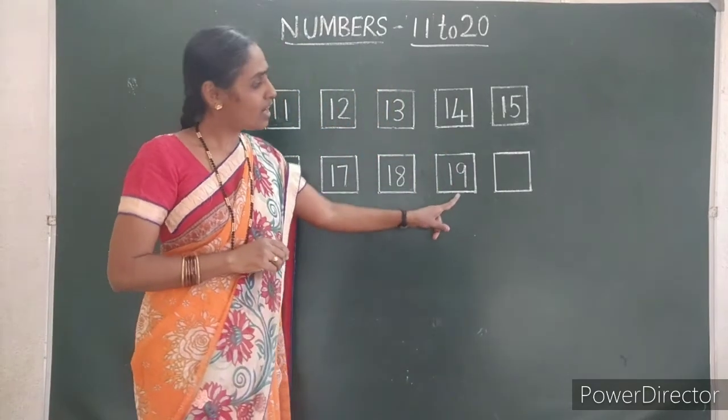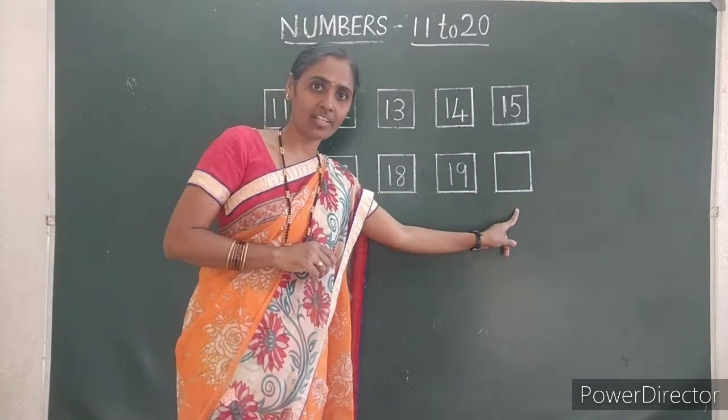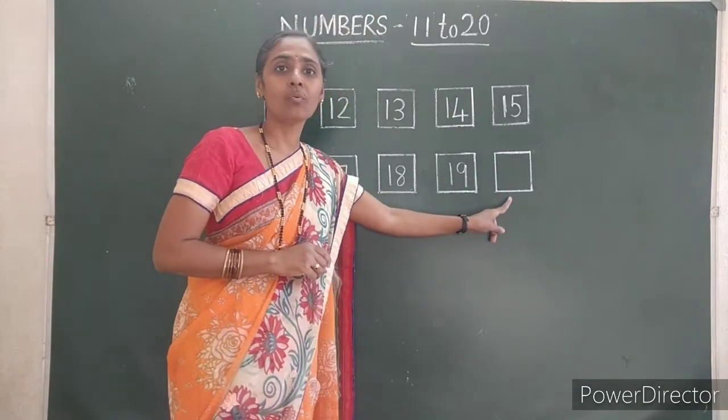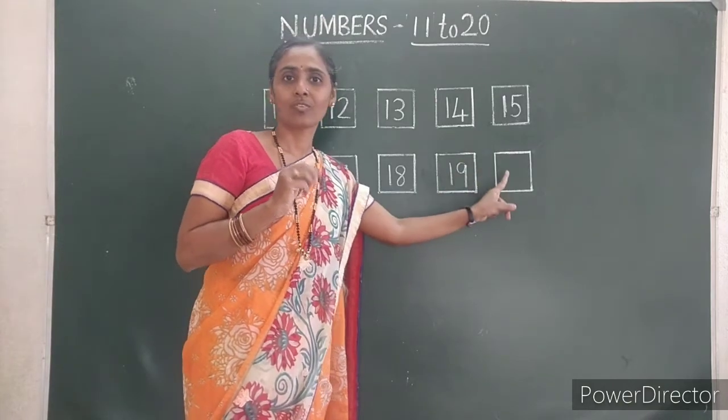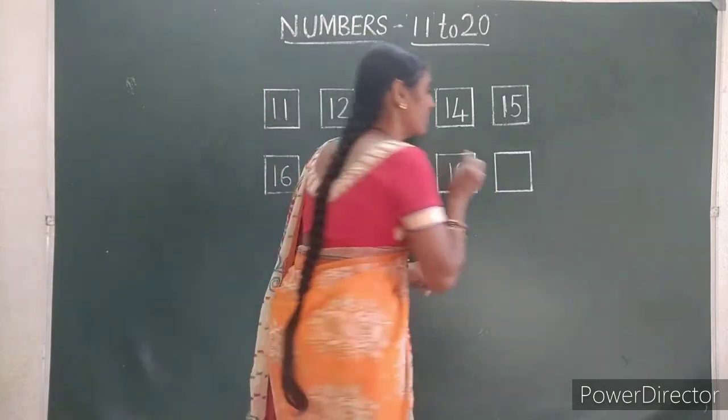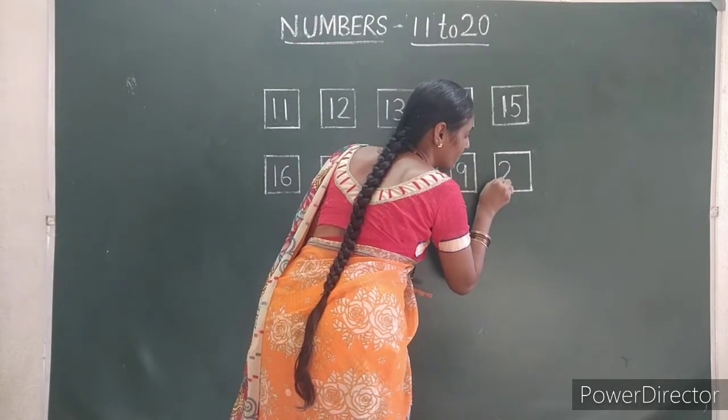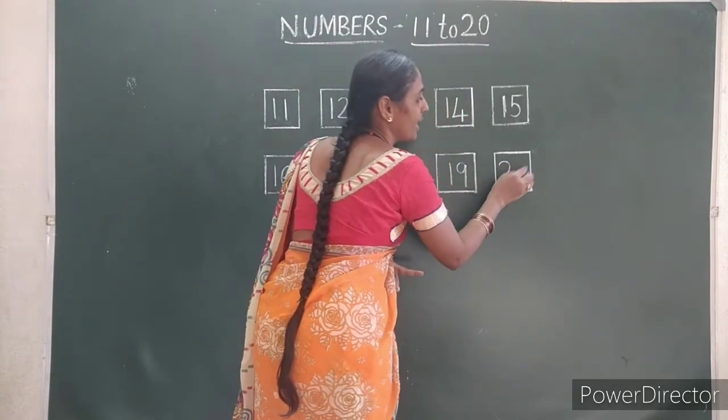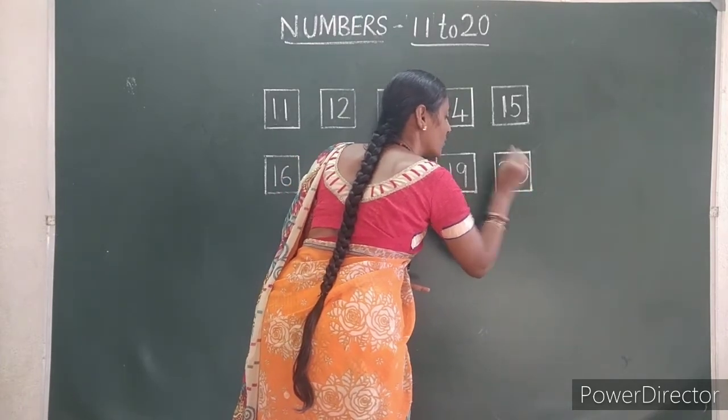Nineteen. After nineteen, the number is twenty. Now, which number will come first? Two. So, first you have to write two, then zero. Twenty.